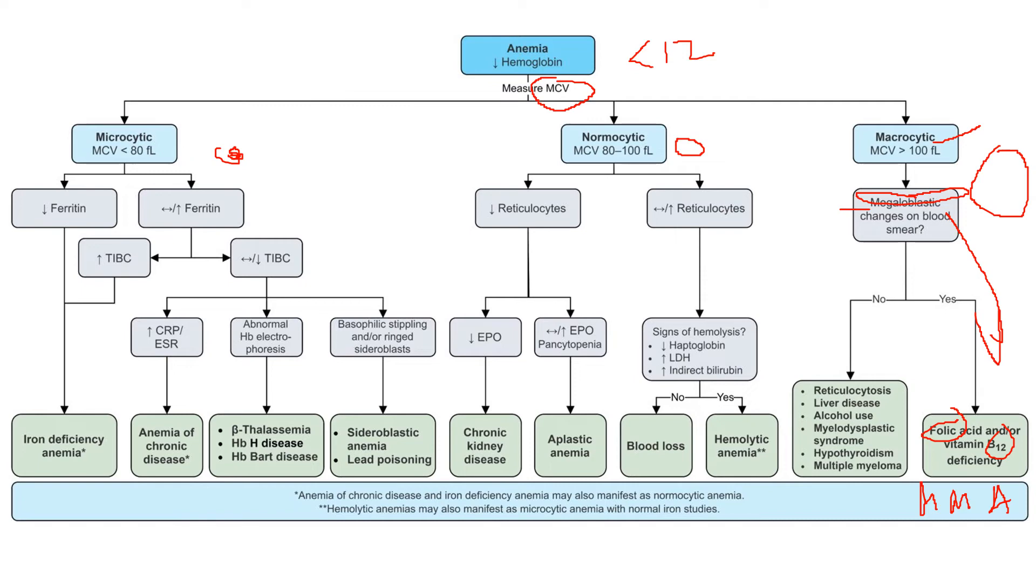Both of these you'll usually want to replete in people like alcoholics. But methylmalonic acid is going to be normal in folic acid deficiency and high in B12 deficiency because you need B12 to process this acid so it doesn't form.